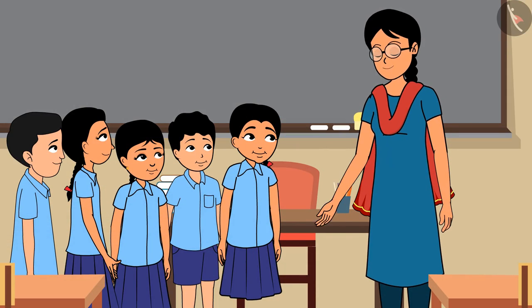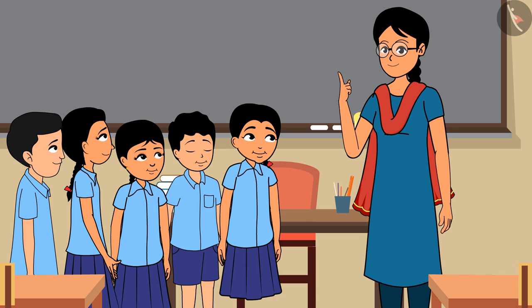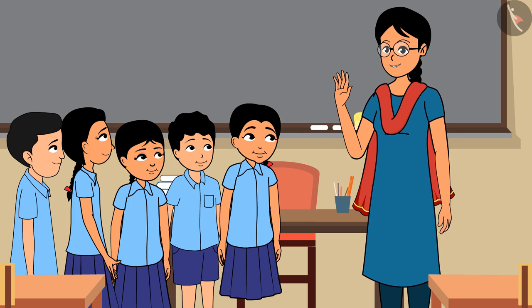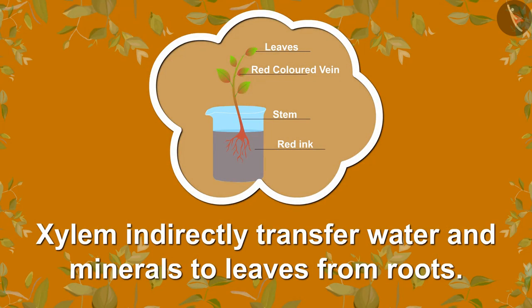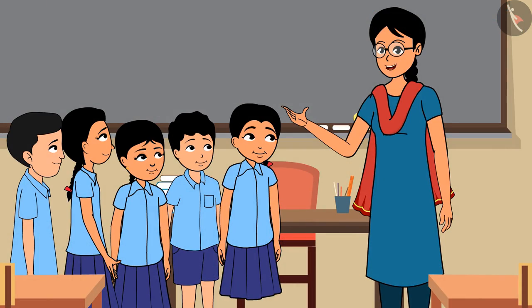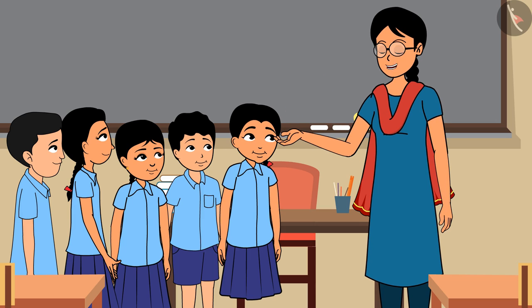Children, what is going on? What is this, Geeta? It looks like an experiment of transportation of water in plants! Children, the vascular tissue present in the plant for the transportation of water and food is known as xylem. All of you collect information about this and bring it.